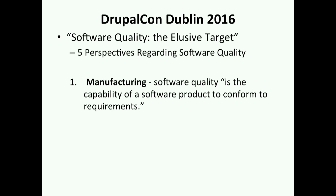Let's talk about some ideas on what software quality is. The article 'Software Quality: The Elusive Target' has five perspectives. The first is the manufacturing perspective: software quality is the capability of a software product to conform to requirements. To me, this is a hedge — all the software has to do is conform to requirements. But so much can go wrong, and there are so many repeated changes, that it's difficult to just conform to requirements.